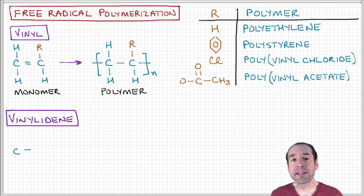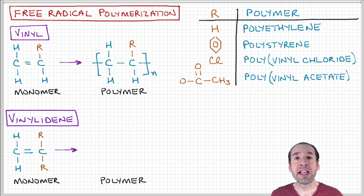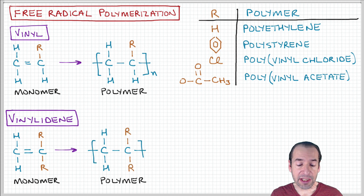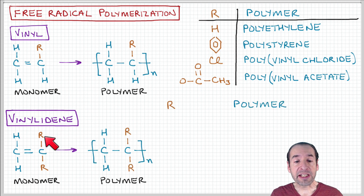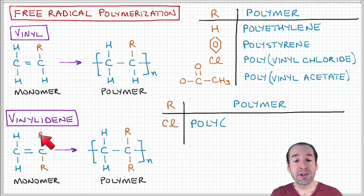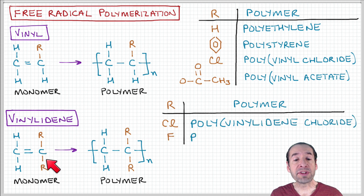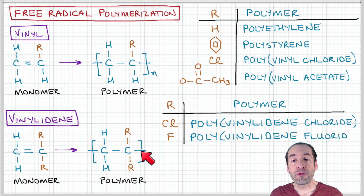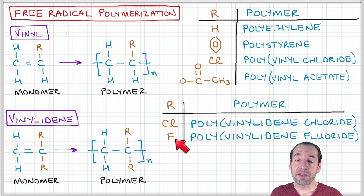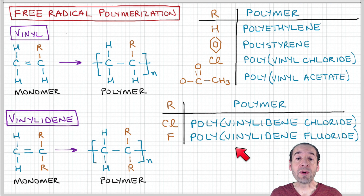Another class of polymers synthesized by free radical polymerization is a variation called vinylidene. Here you have two non-hydrogen groups attached to one of the carbons on the backbone. For example, if these are two chlorines, you would have polyvinylidene chloride, and if these are two fluorines, you would have polyvinylidene fluoride.